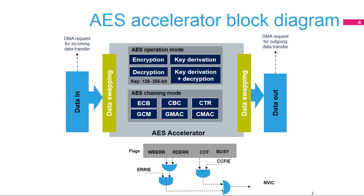The AES Accelerator supports six chaining algorithms or modes. Electronic Codebook, or ECB, is the default mode. This mode does not use the AES IVR register and there are no chaining operations — the message is divided into blocks and each block is encrypted separately. Cipher Block Chaining, CBC: each block of plaintext is XOR'd with the previous ciphertext block before being encrypted. To make each message unique, an initialization vector is used when processing the first block.